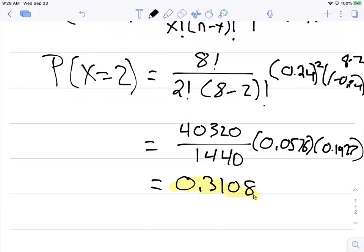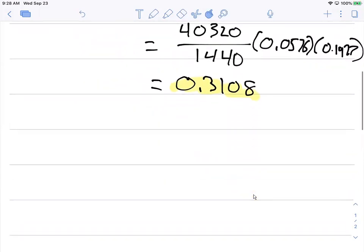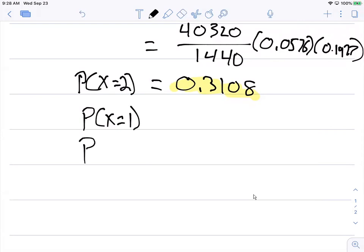The second part of the question asks, what about the probability of two or fewer? All we would need to do there, remember the binomial is a discrete random variable. We know the probability of X when it's two. We can do the same thing for the probability of X equals one, and the probability that X equals zero.